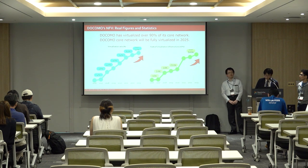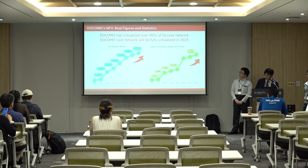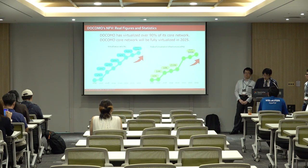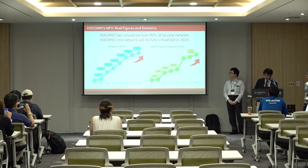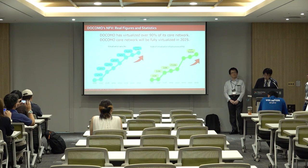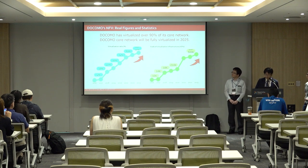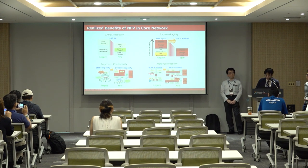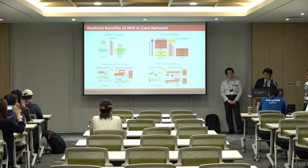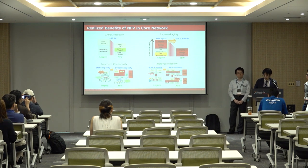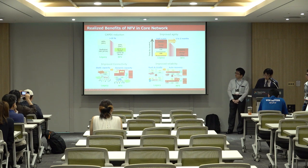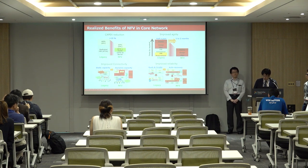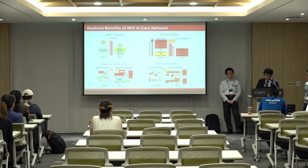This is a real figure and statistics. Docomo has virtualized over 90% of its network and the scale of vCPU is over 500K based on OpenStack. Docomo got four big benefits by virtualization: CapEx reduction using common servers, improved agility by resource pool that OpenStack manages, improved scalability by scaling, and improved reliability by healing. OpenStack resolves many operational issues of mobile operators.